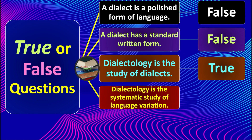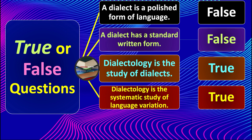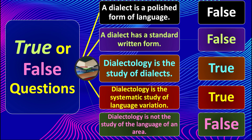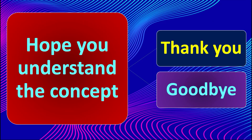The fourth question: dialectology is the systematic study of language variation — true or false? Of course it's true. The last question: dialectology is not the study of the language of an area — true or false? That is false; it is indeed the study of the language of an area spoken by certain people living in a certain place. Hope you understand the concept. Thank you and goodbye.